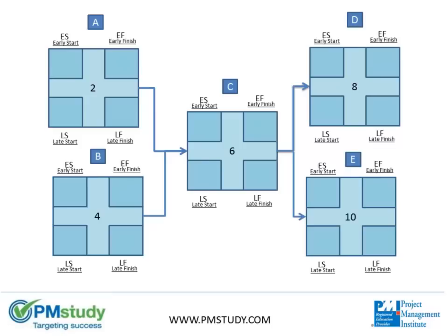Let's run through the critical path method to determine the float for each task, the critical path, as well as some other key information about our project schedule activities. The first step in the critical path method is a process called the forward pass. We'll calculate the earliest time a task can begin and the earliest time it can end.